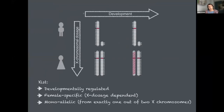XIST has a quite peculiar expression pattern. On one hand, it's controlled in a developmental manner - it's upregulated at a certain stage of embryonic development, specifically at the epiblast stage in mice. It's also controlled in a sex-specific manner, being upregulated only in female cells, and we know this depends only on X-chromosomal dosage and has nothing to do with the Y chromosome. All cells with two X chromosomes will upregulate XIST during differentiation. Finally, XIST shows a monoallelic expression pattern - it's expressed from only one out of two X chromosomes in the same nucleus.